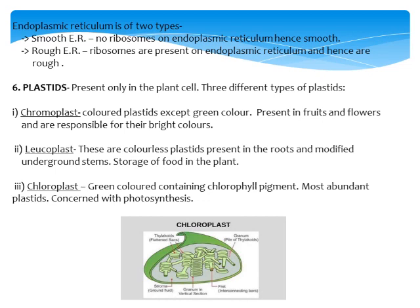Chromoplasts are colored plastids — they give colors such as yellow, orange, and red, but not green. You can see this in colorful flowers and in mangoes which are red or yellow in color. These colors are due to the presence of chromoplast, which imparts bright colors to fruits and flowers.